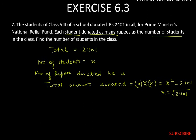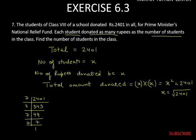So let's find the prime factors of 2,401. 2,401 is divisible by 7, giving 343. 343 is again divisible by 7, giving 49. 49 is divisible by 7 again, giving 7. So 2,401 = 7 × 7 × 7 × 7.